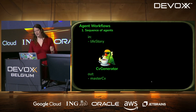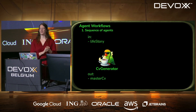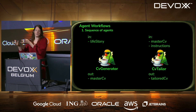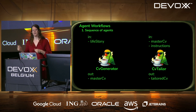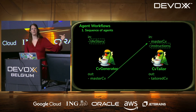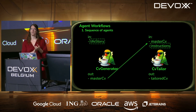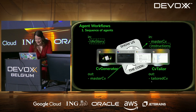Here's a CV writing example. We have a CV Generator that takes in your life story and produces a master CV, then a CV Tailor that tailors the master CV to specific instructions — like a job description — producing a tailored CV. If you design agentic systems, I recommend drawing them out first to identify real inputs, real outputs, and intermediary values. The master CV from agent one is an intermediary that feeds into agent two.